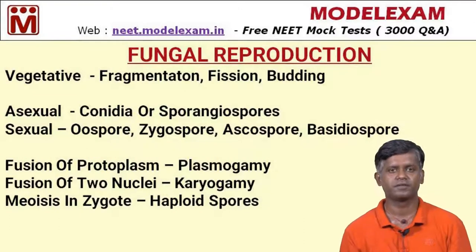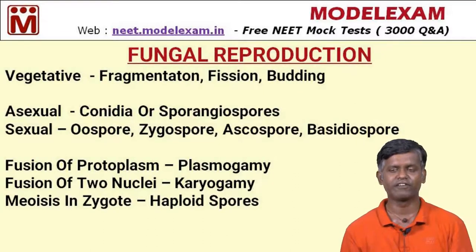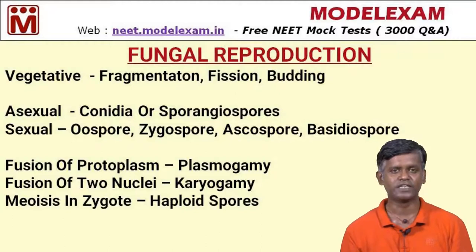Fungal reproduction: the kingdom Fungi has distinct varieties of reproduction. Fungi can multiply in large numbers by development of spores. The vegetative reproduction in fungi — the best example is yeast, whose scientific name is Saccharomyces cerevisiae.